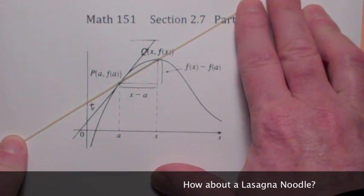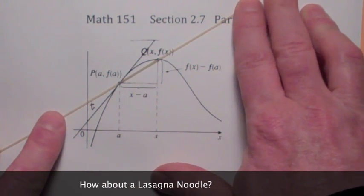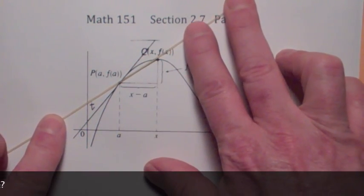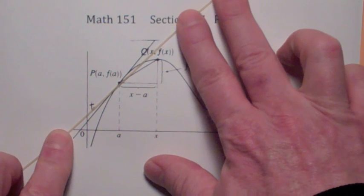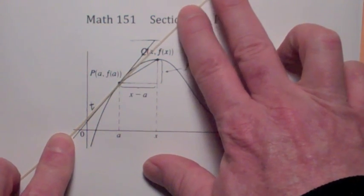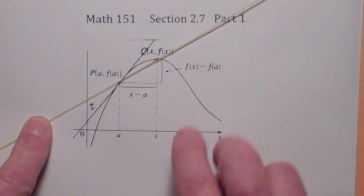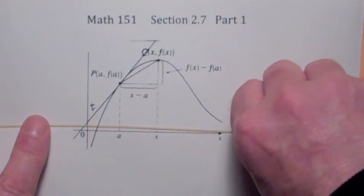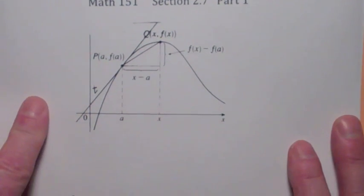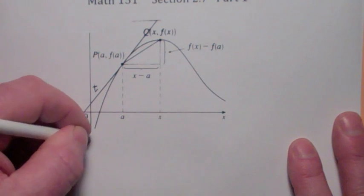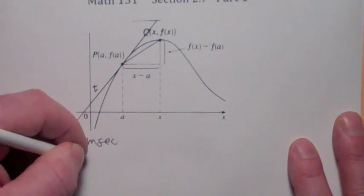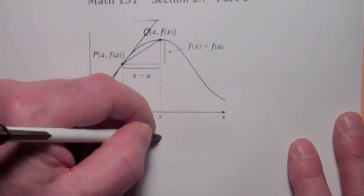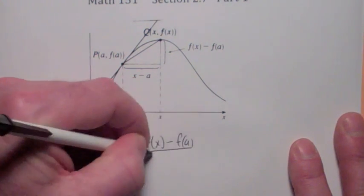As the Q point gets close to P, the secant line is getting close to the tangent line. In this first example, another way to say that is as x gets close to a. So the way we define the slope of the secant line — wouldn't the slope of the secant line from P to Q be f(x) minus f(a) over x minus a?